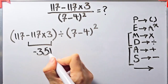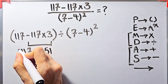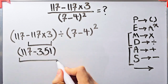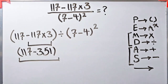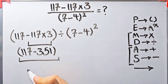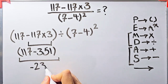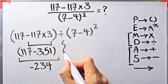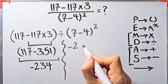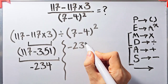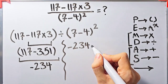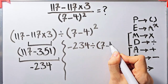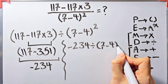Now we have 117 minus 351. 117 minus 351 equals negative 234. Now the question is negative 234 divided by open parentheses 7 minus 4 closed parentheses, then all of them to the power of 2.